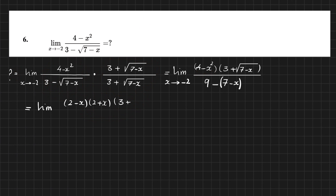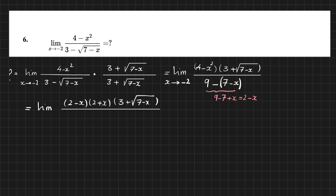After applying the conjugate rule, the denominator simplifies: 9 minus (7 minus x) equals 2 plus x. So we have (2 minus x)(2 plus x) in the numerator, all over (2 plus x) times (3 plus root(7 minus x)). The (2 plus x) factors cancel, leaving the limit of (2 minus x) over (3 plus root(7 minus x)) as x approaches minus 2.